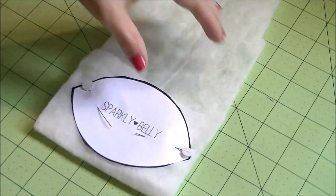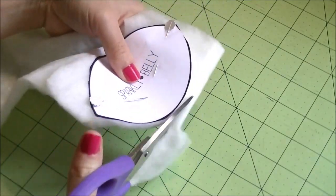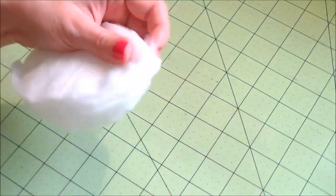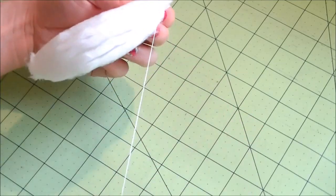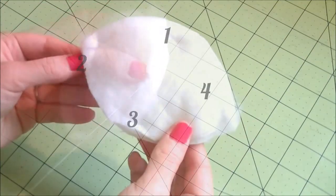Next, place the same pattern on the batting and cut out as many layers as the thickness you need. I'm using five layers for each insert. Then take a threaded needle and make small stitches to hold the layers together at four points near the edges.